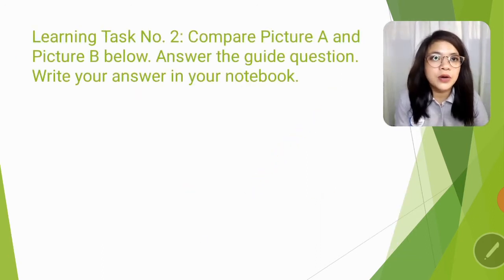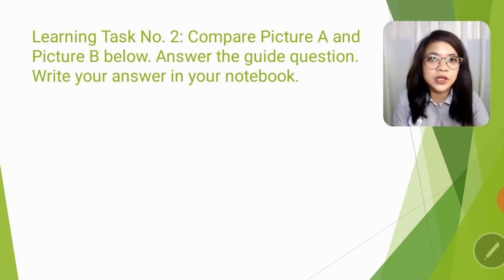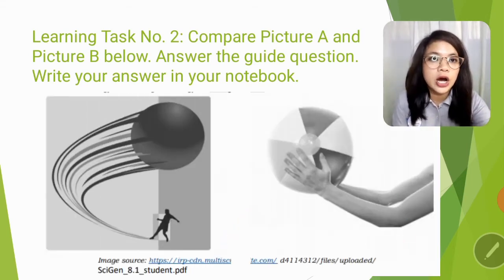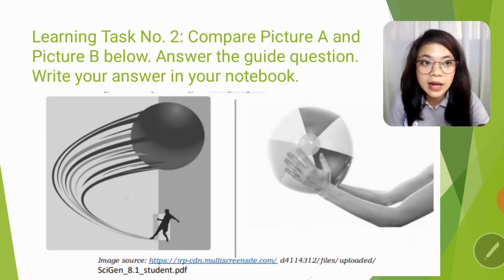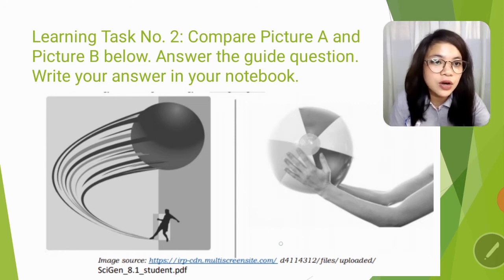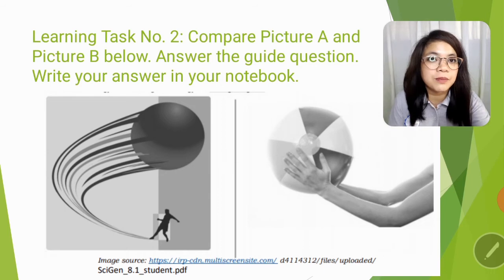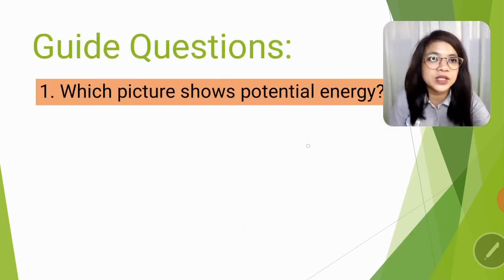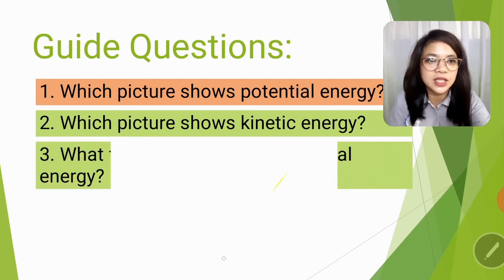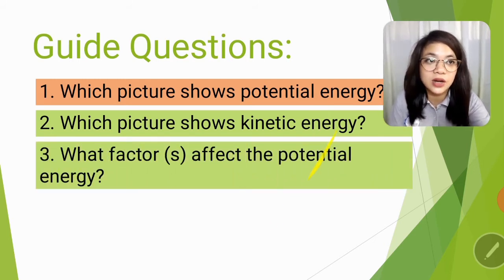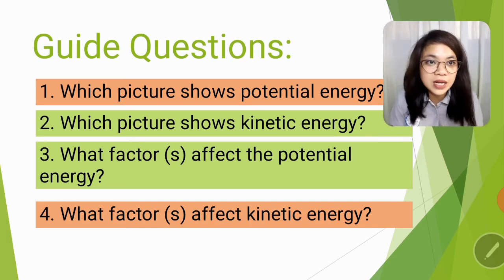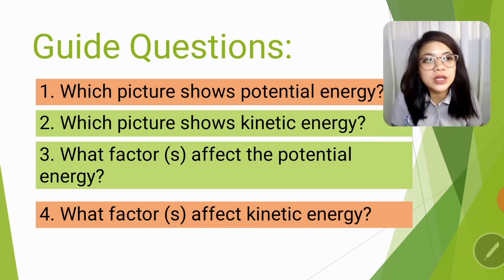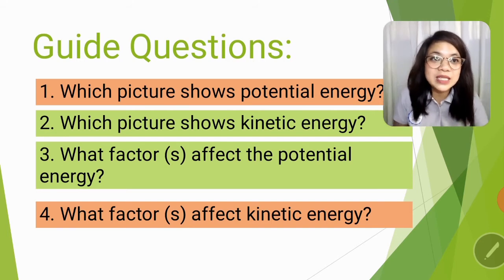For learning task number two, compare picture A and picture B below. Answer the guide question, then write your answer on your paper. You have there on your module these two pictures. Yung isa, sinipa yung bola, then yung isa naman nag-catch ng bola. So you're just going to compare picture A from picture B. Then just answer the guide questions: which picture shows potential energy? Which picture shows kinetic energy? What factor or factors affect the potential energy? And what factor or factors affect kinetic energy? Ano daw yung mga factors na naka-apekto kay potential at kay kinetic energy?